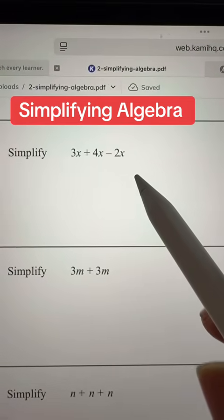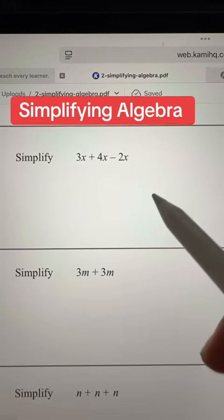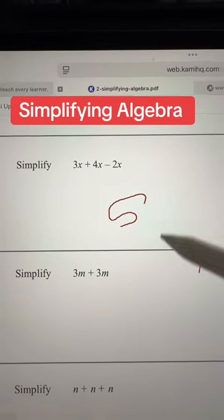So you have 3 plus 4x minus 2x. 3 plus 4 is 7, 7 minus 2 is 5x for this one.